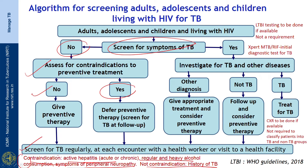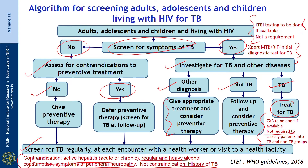Once preventive therapy is given, patients must be screened for TB regularly at each encounter with a healthcare worker or during a visit to a health facility. If symptoms suggestive of TB develop, investigate for TB and other diseases. Expert MTB/RIF is used as the initial diagnostic test, and chest X-ray should be done if available, though it is not a requirement to classify patients. If TB is established, treat for TB; if not TB, follow up and consider preventive therapy. If another diagnosis is established, give appropriate treatment and then consider preventive therapy. Latent TB infection testing can be done if available, but it is not a requirement to start preventive therapy in PLHIVs.